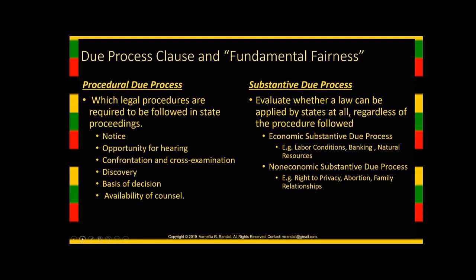Substantive due process claims, also based on fundamental fairness, evaluate whether the law can be applied at all — not whether the procedure is correct, but whether the law itself can be applied. It generally deals with specific subject areas: economic substantive due process, which covers things like labor conditions, baking, and natural resources; and non-economic substantive due process, which covers the right to privacy, abortion, and family relationships.